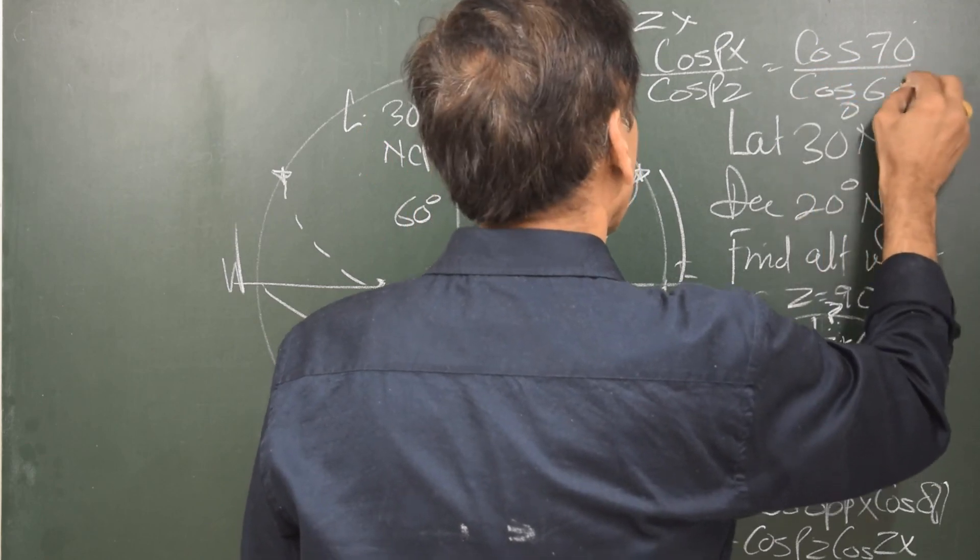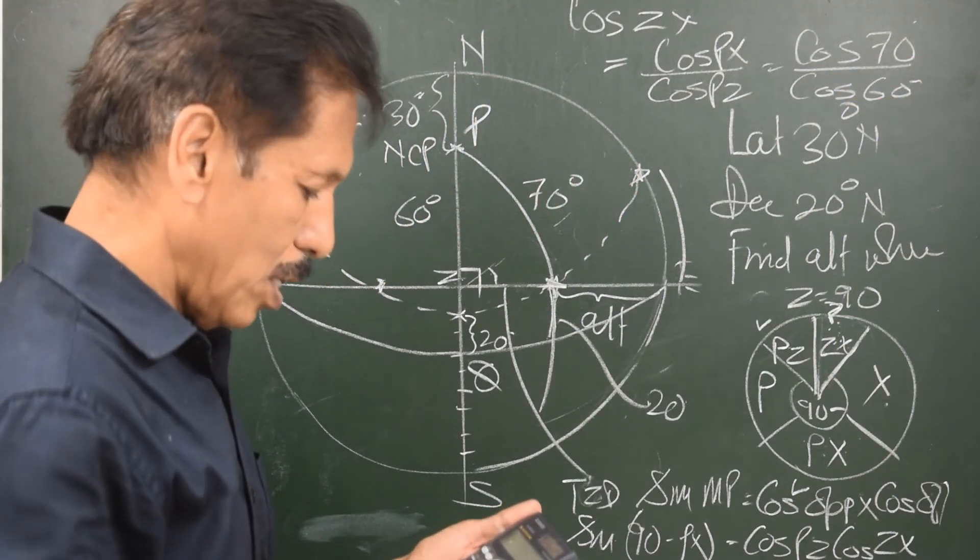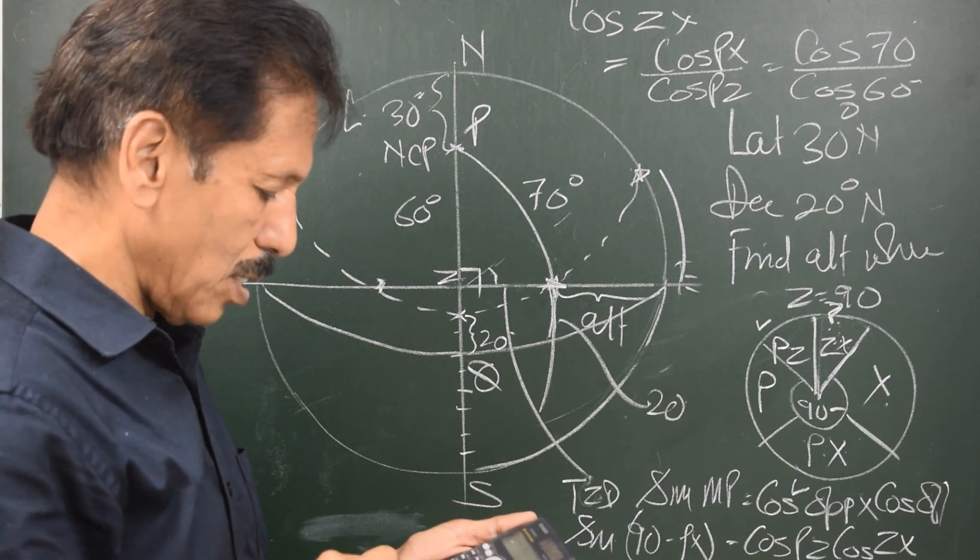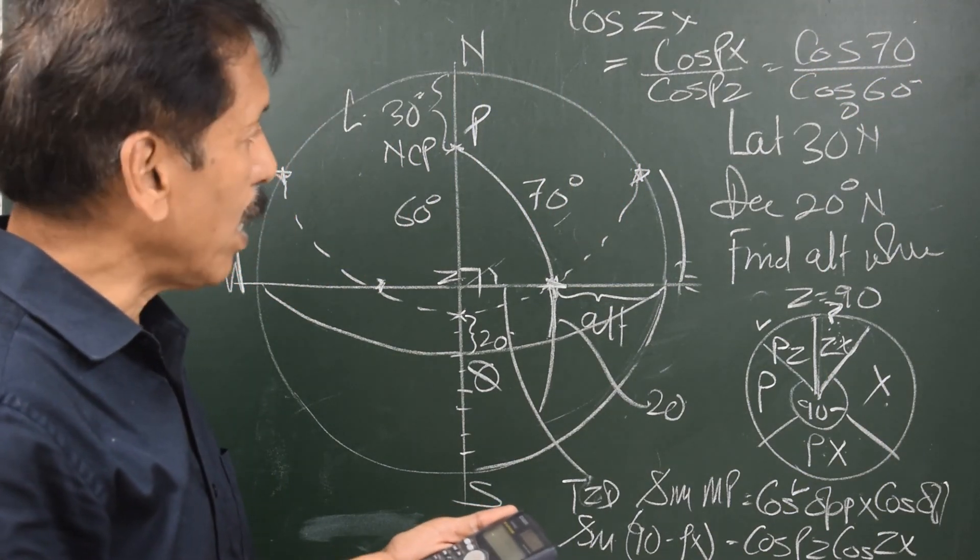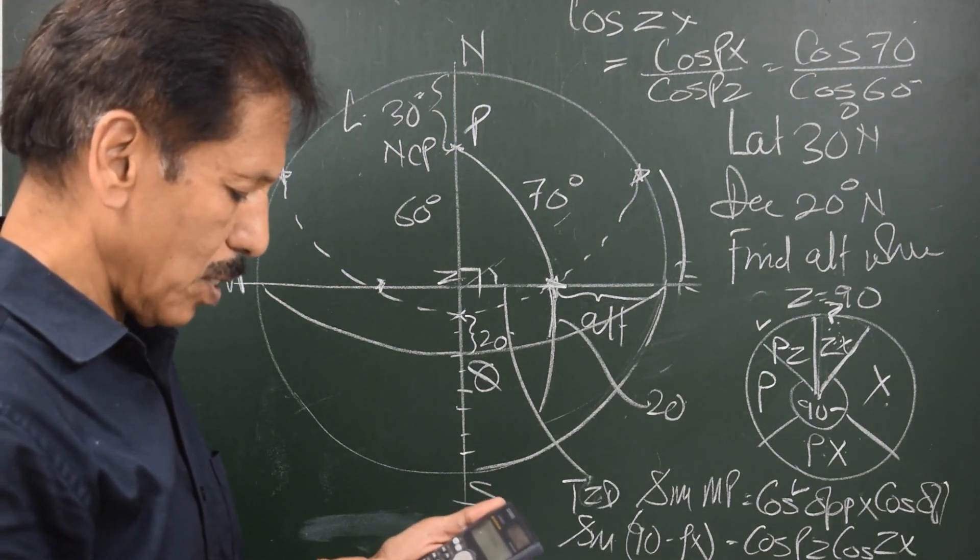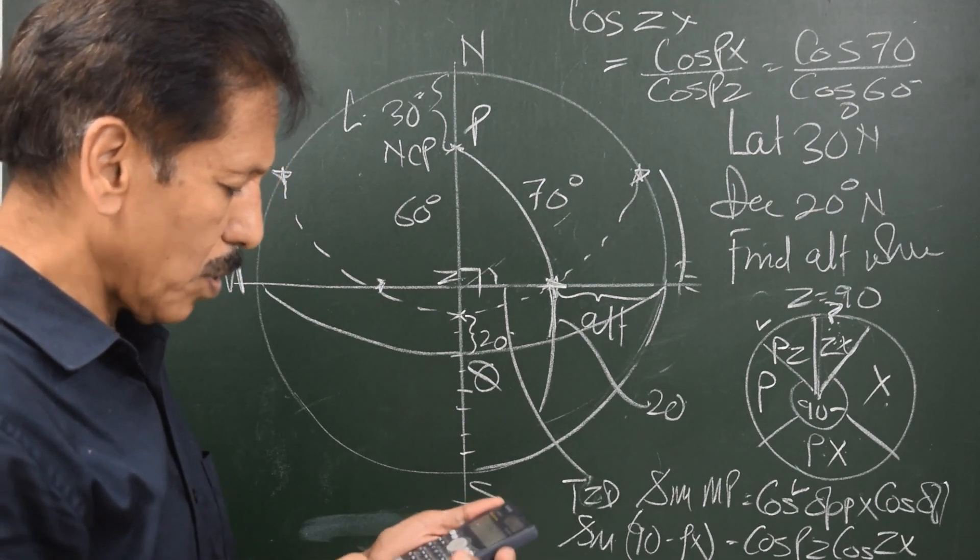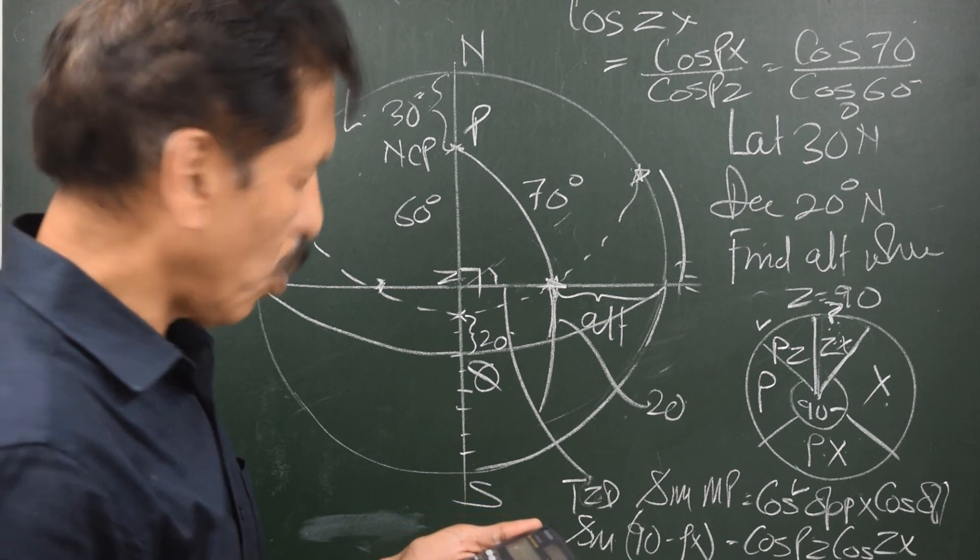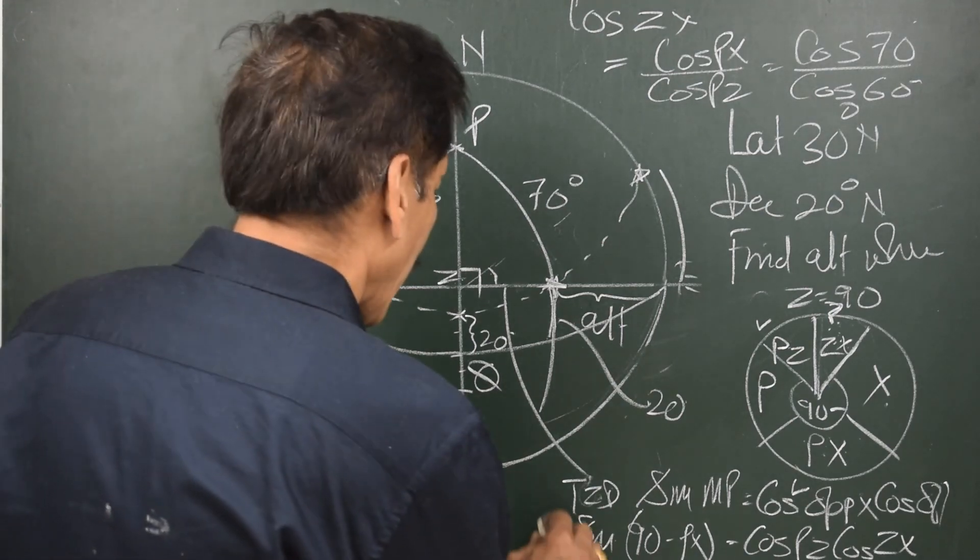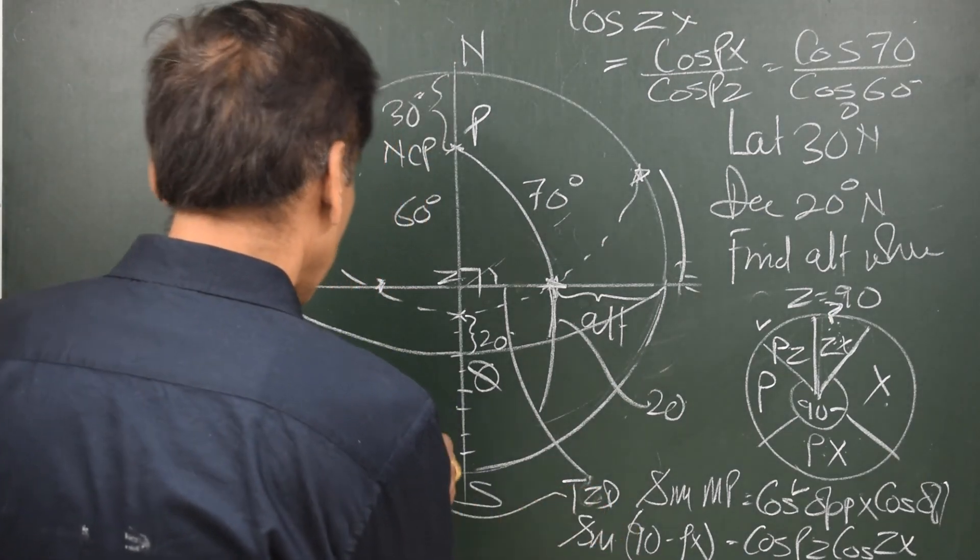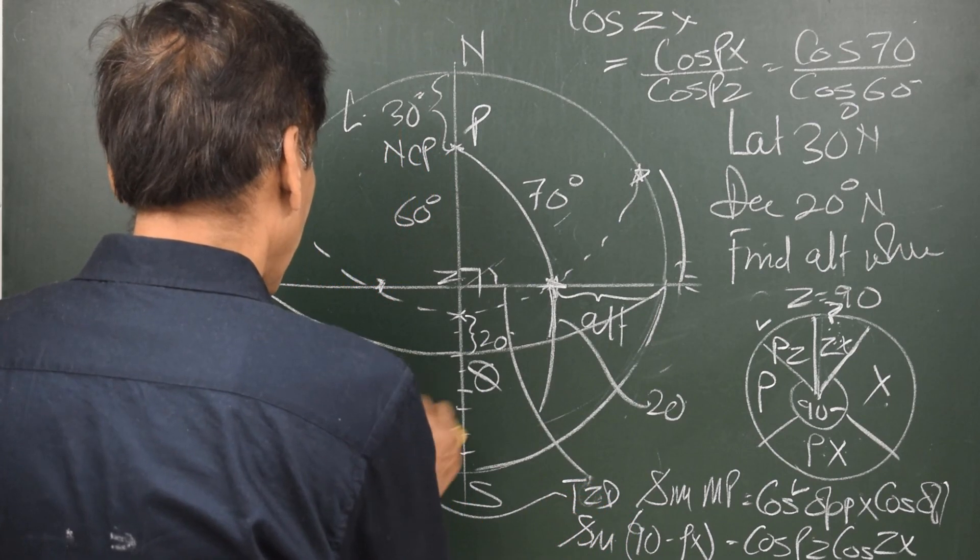cos 60 degrees. So, cos 70 degrees divided by cos 60 degrees equal to shift cos. That gives me 46.8 degrees. So, I get the true zenith distance as 46.8 degrees.